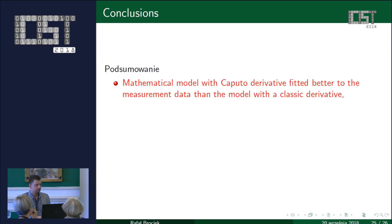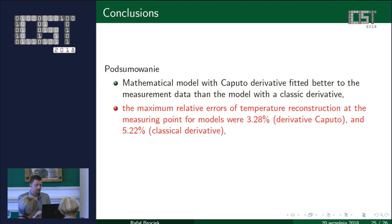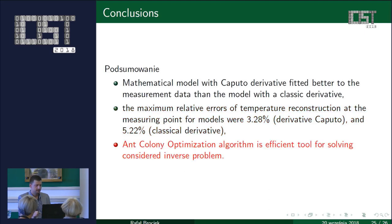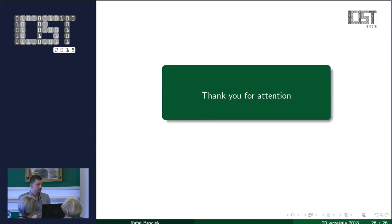Conclusions: we compared two mathematical models of heat conduction, and the model with the fractional derivative is better in this case than the model with classical derivative. The error in the case of the Caputo fractional derivative is about 3.28%, and in the case of classical derivative it is approximately 5%. The ant-colony optimization algorithm is efficient — it is a good tool for solving this type of optimization and inverse problem. Thank you very much.